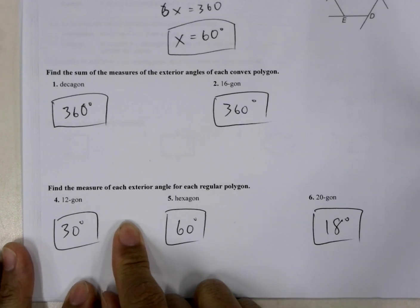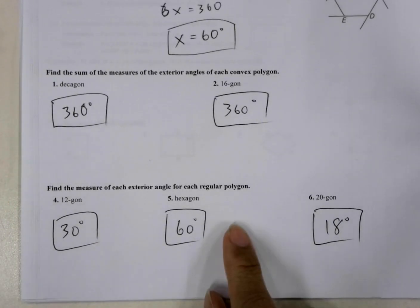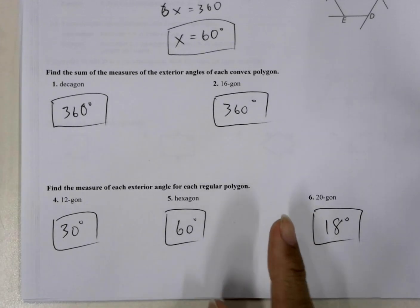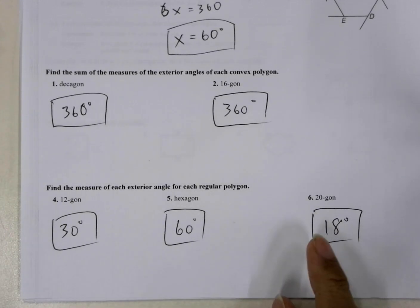And then we could solve for it. Here would be 6x is equal to 360. And here would be 20x is equal to 360. And we come up with these solutions here.